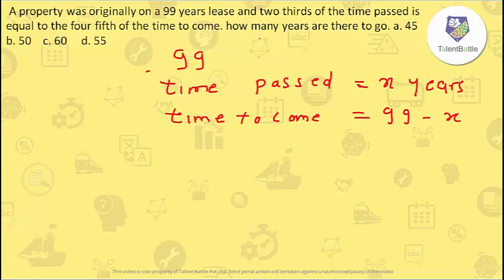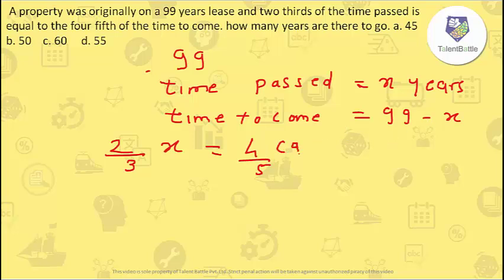So what is the equation they have given? Two-thirds of the time past — we have considered time past as X — so (2/3) × X is equal to four-fifths of the time to come. Time to come is nothing but 99 minus X. So (2/3) × X = (4/5) × (99 − X).